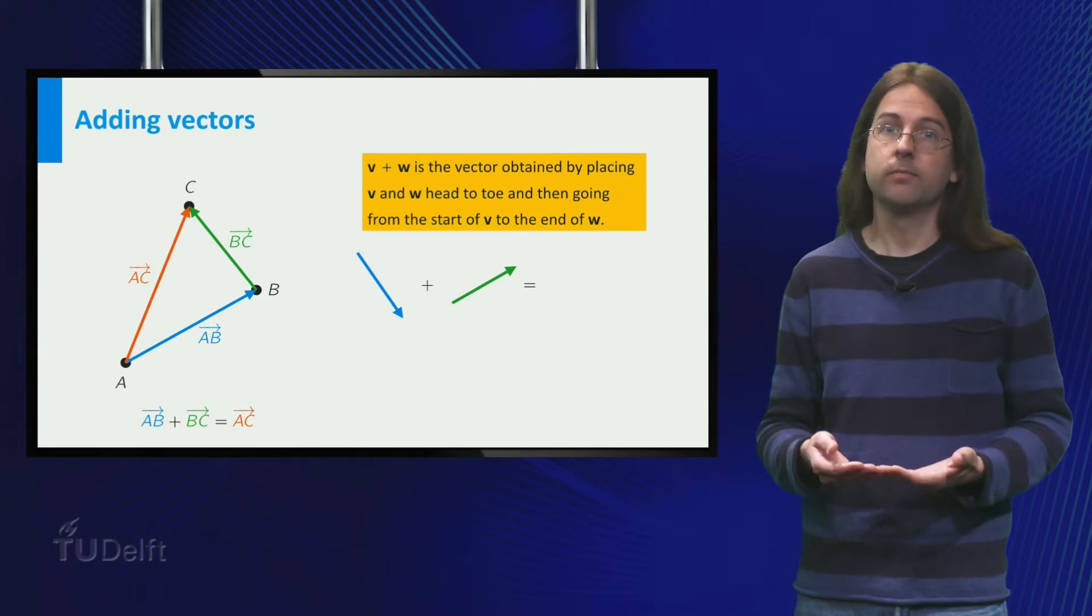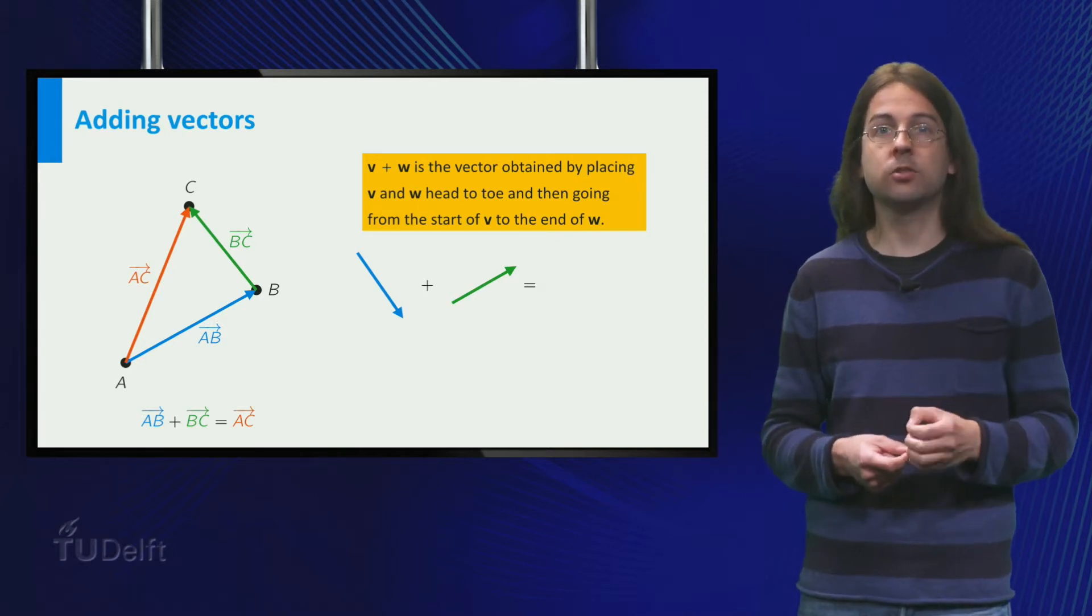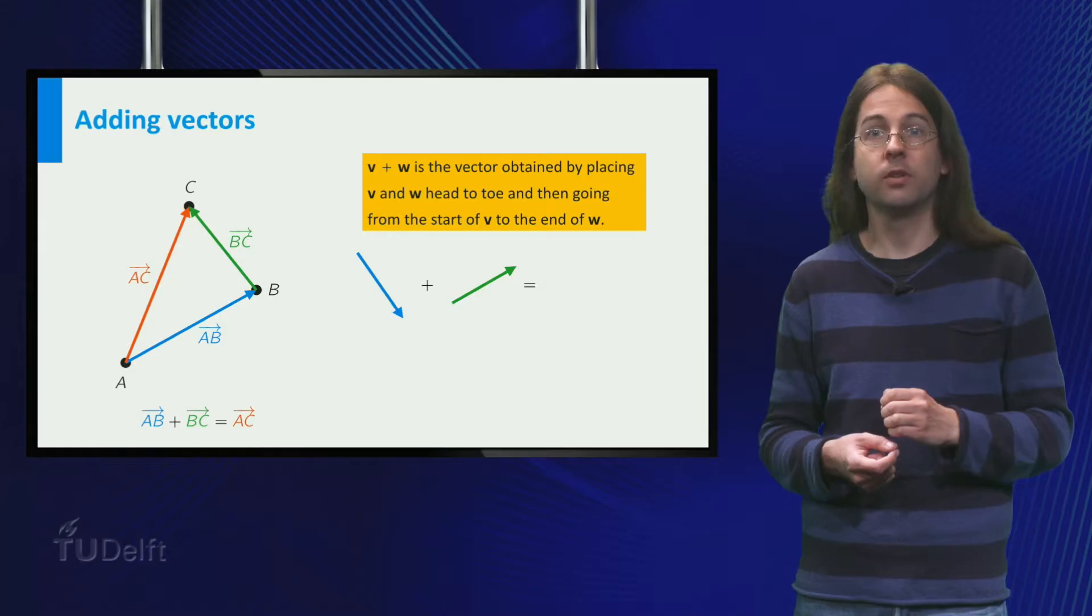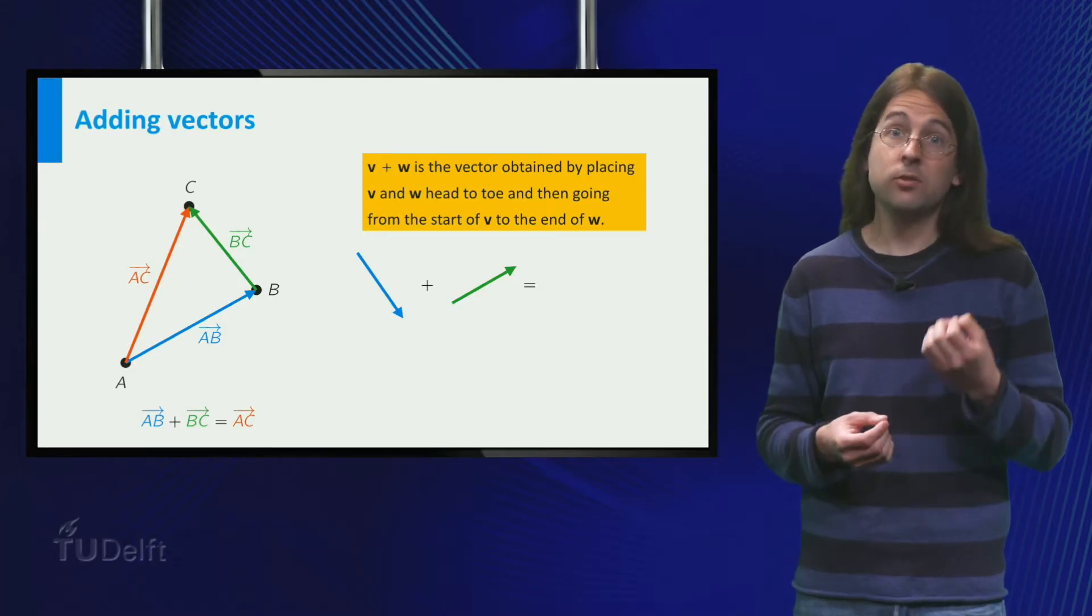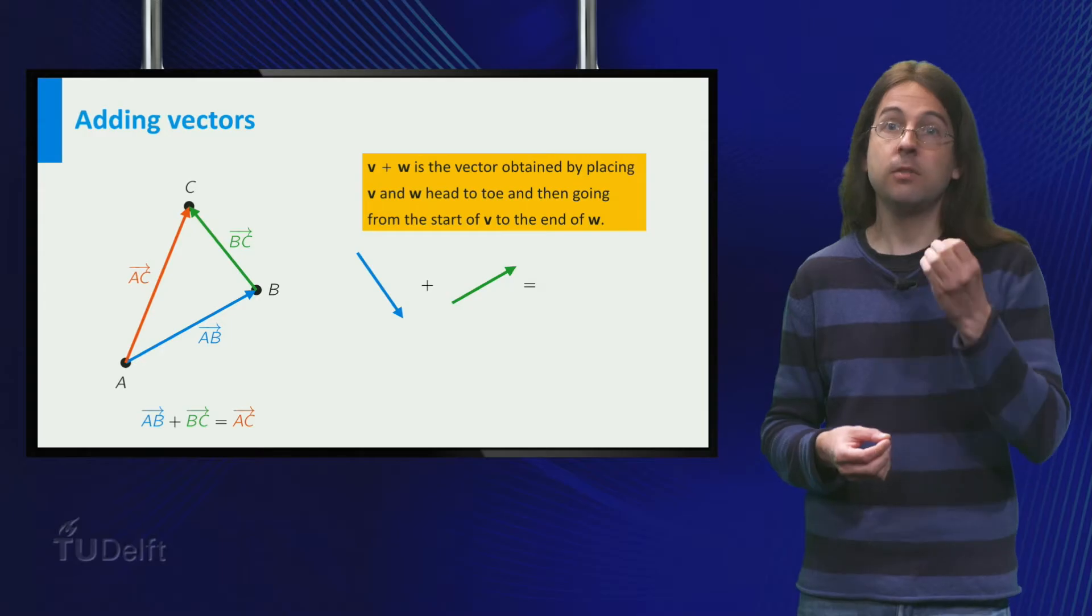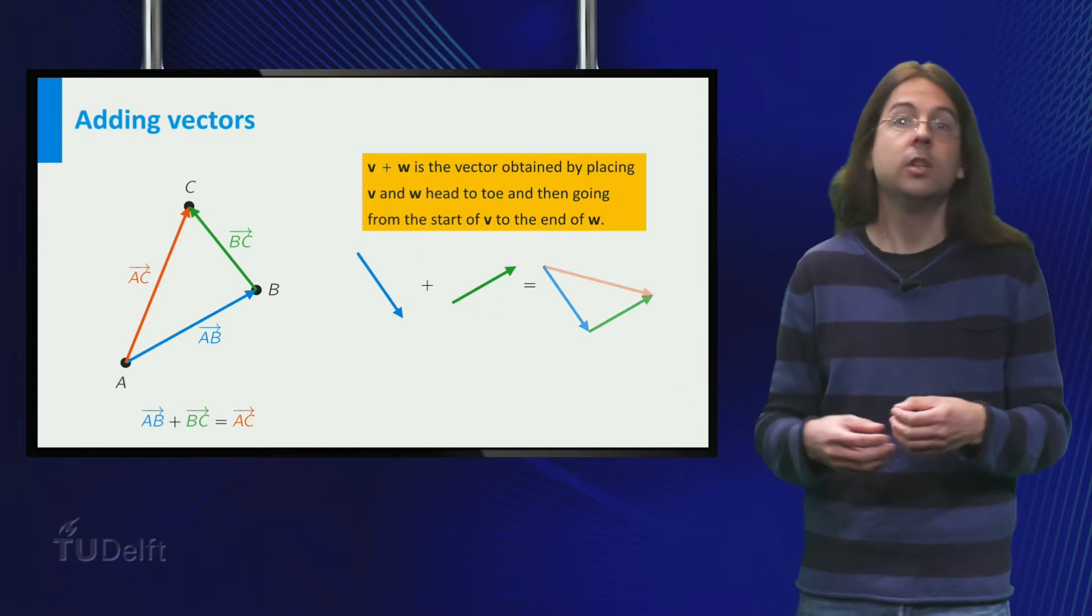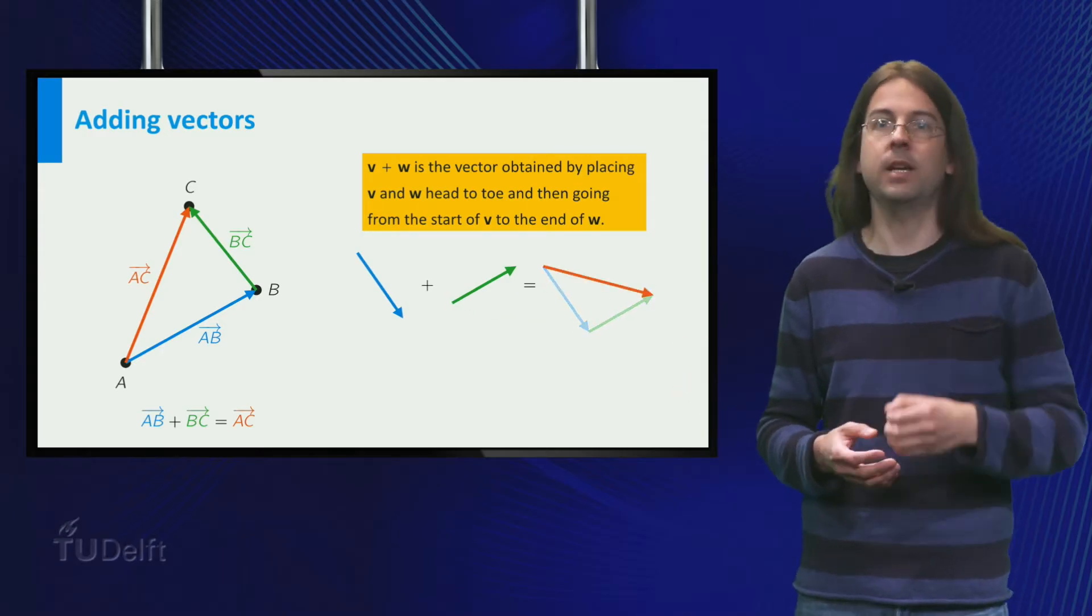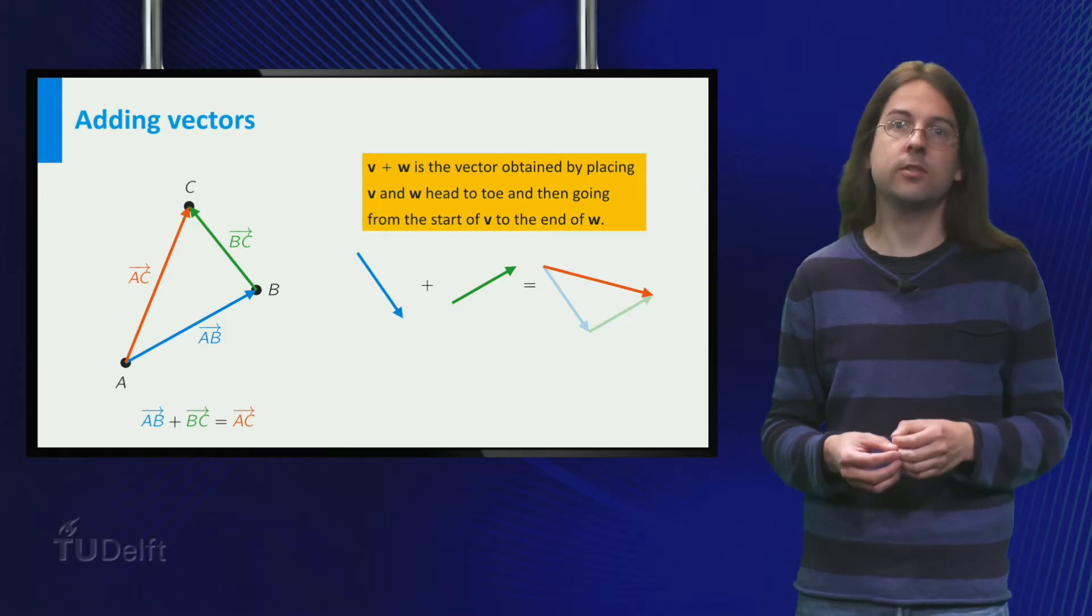Consider the sum on the right. Recall that vectors don't have a fixed starting point. So if we want to add two vectors which are not head to toe, we can shift one or both of them to place them head to toe, and then do this addition.